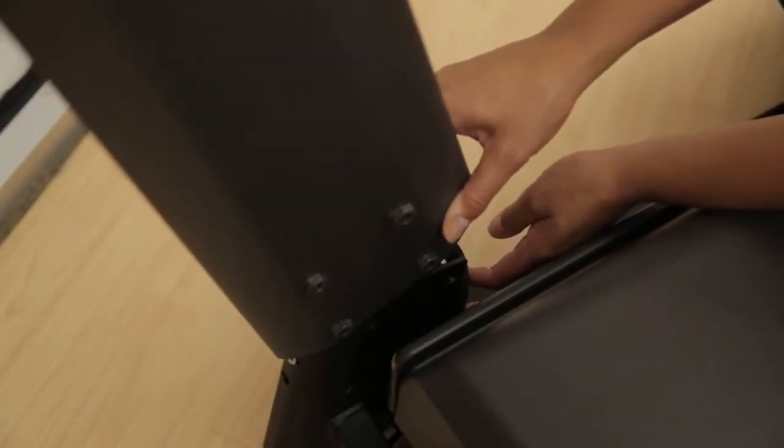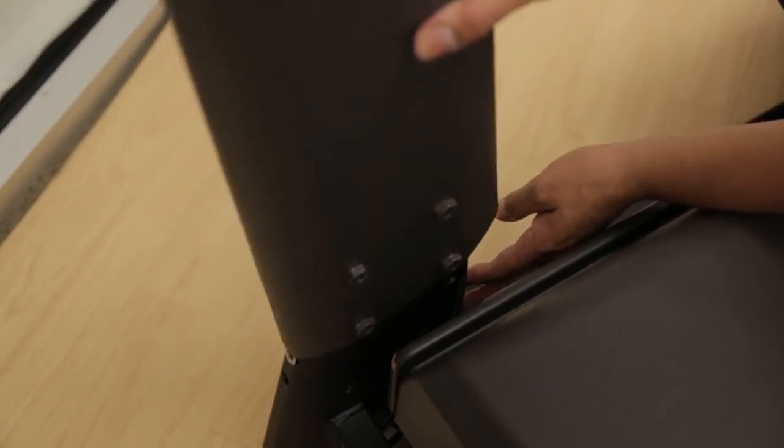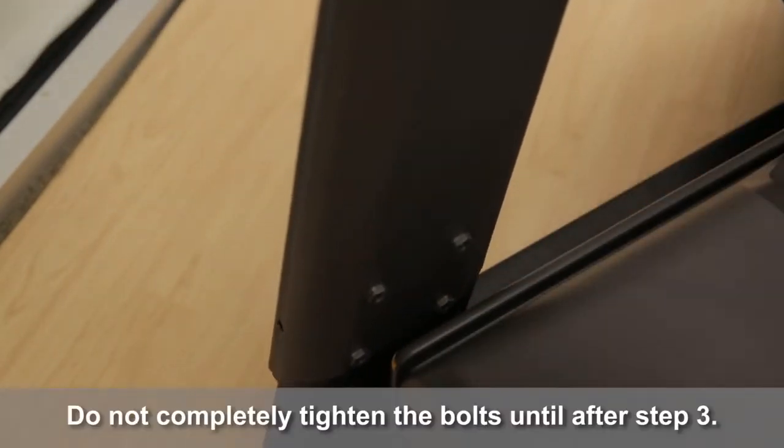Slide the mast onto the base frame, paying attention not to pinch the cable. Attach the bolts at the base of the console mast.